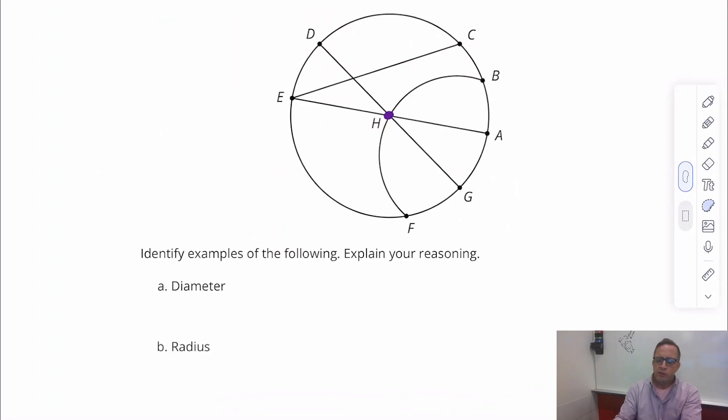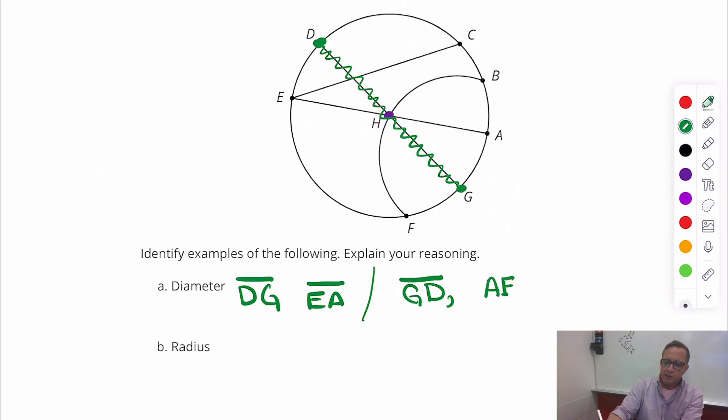Diameter is, I see a couple diameters. I would say the diameter is going to be segment DG. Segment DG is a diameter. And my reasoning for that one would be that it goes to the middle and both the endpoints are on the circle. That's important. So that's the diameter. Also, another example of the diameter would be EA. And I don't think it matters whether you write GD instead of DG, that's okay. There's no rules saying you have to put in ABC order.